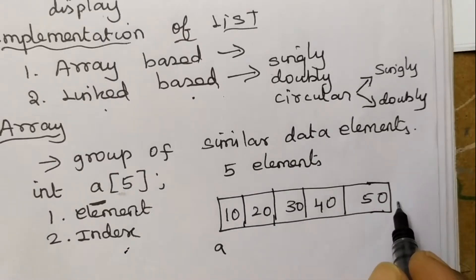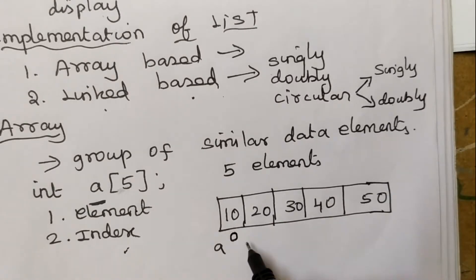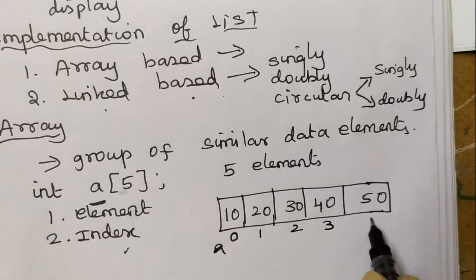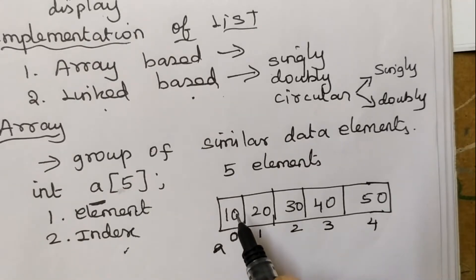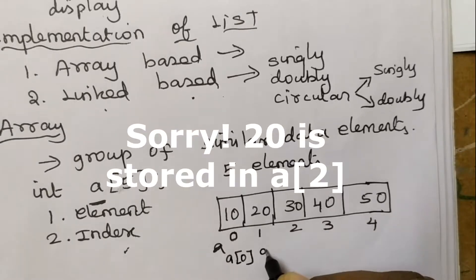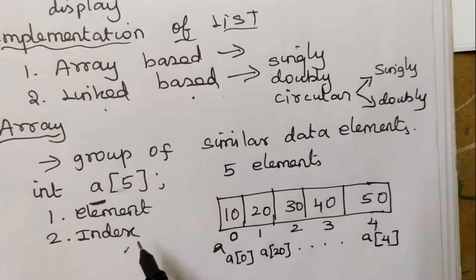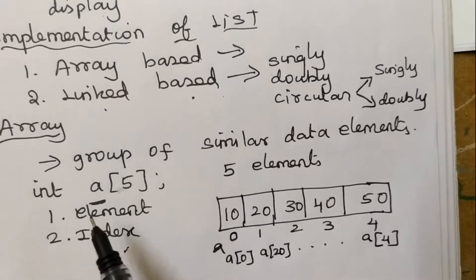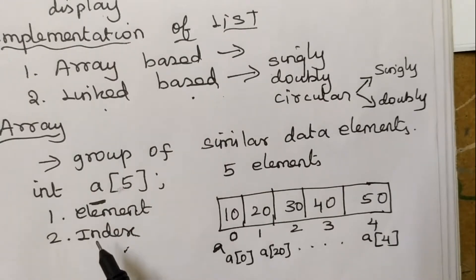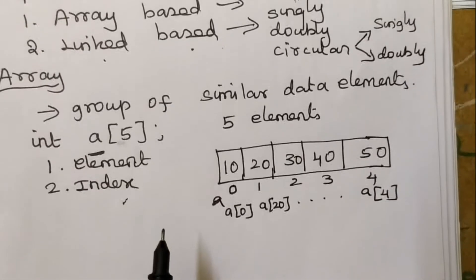Elements 10, 20, 30, 40, 50 are stored in the array. The value 10 is stored at index 0, so index values go from 0 to 4. So 10 is stored in a[0], 20 is stored in a[1], and so on — all 5 elements are stored. With arrays, we immediately need to remember two things: the element form and the index form.